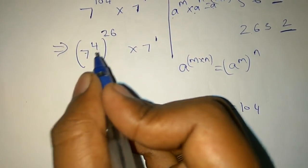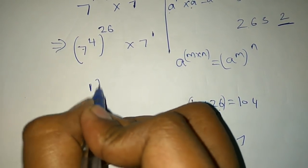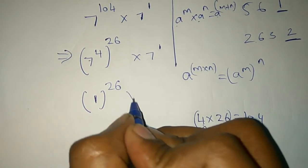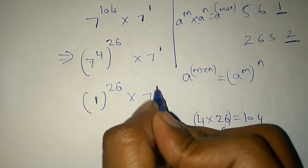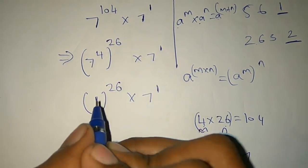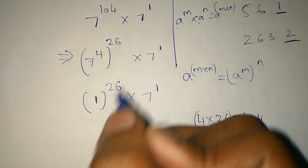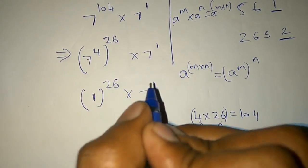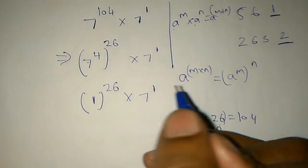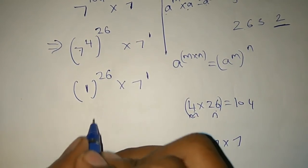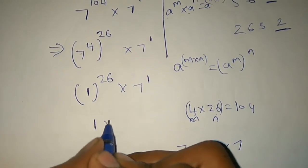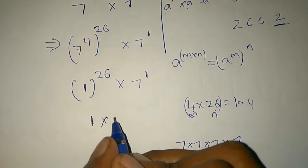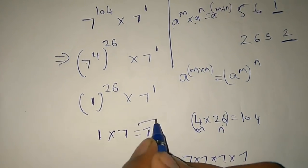If we go to 7 power 4, we go to unit 1 and we go to 1. Power 26, into 7 power 1. So 1 is 1. If we go to 1, it will be 1. So 1 power 26 is 1 into 1 into 1 — it will be 1. Now we go to 1, into 7 power 1. So 7 power 1 is 7. Equal to 7.